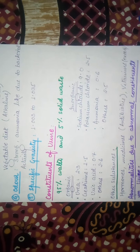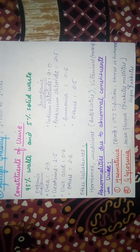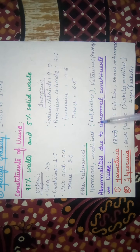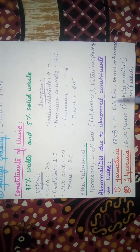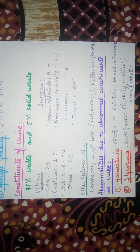Next we will discuss a few abnormalities related to urine. In urine there are some abnormal components that cause diseases. The first disease is called hematuria. If there is an infection in the urinary tract, a urinary tract infection, or if there are stones or tumors in the kidney, then in such conditions there will be blood with urine. This disease is called hematuria.